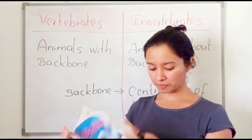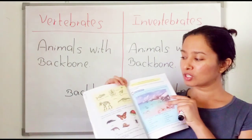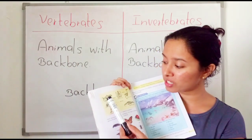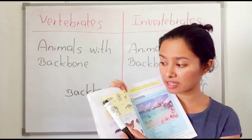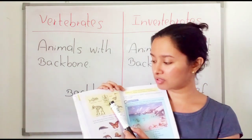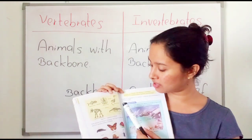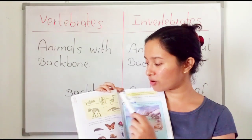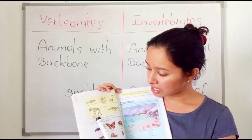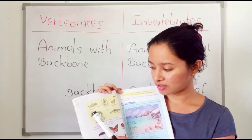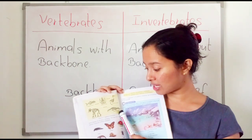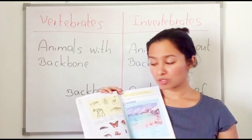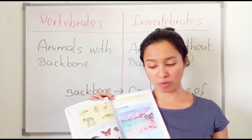Look at the skeleton of a fish — that's the backbone, the central line. And the frog — that is the central line of bones. Also the skeleton of an ostrich — here also a backbone. The skeleton of an elephant — that is the backbone. And the skeleton of a crocodile — you can see the backbone. So these animals all have a backbone.